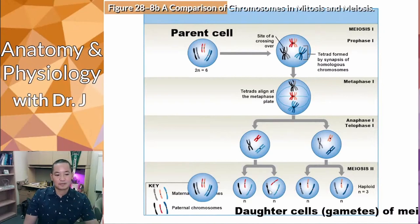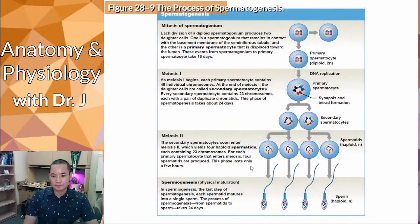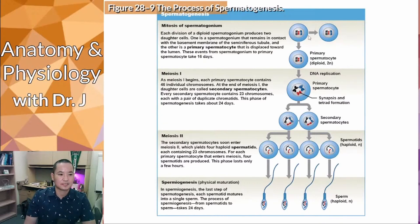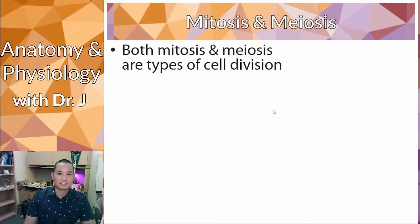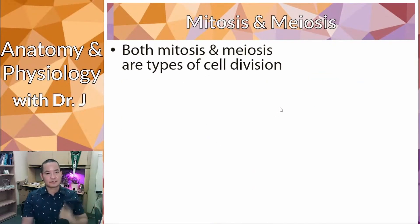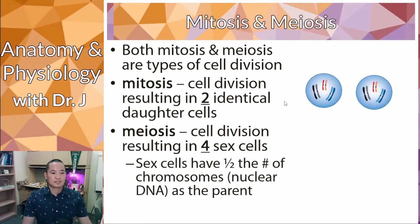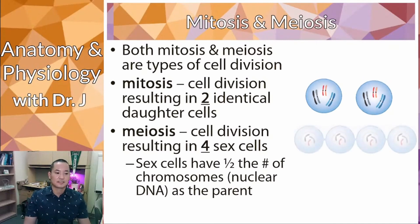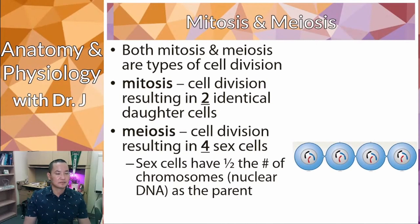Now with meiosis, the parent cell divides but produces four daughter cells. Each of these daughter cells has half the chromosomes of the original parent. That's a key difference between meiosis and mitosis: in mitosis you generate virtually identical cells, but in meiosis you have a halving of the chromosomes, resulting in four sex cells with half the amount of chromosomes as the parent.